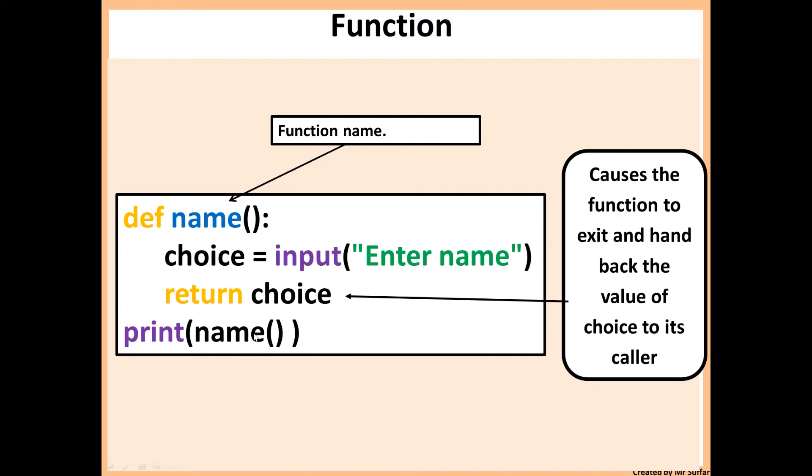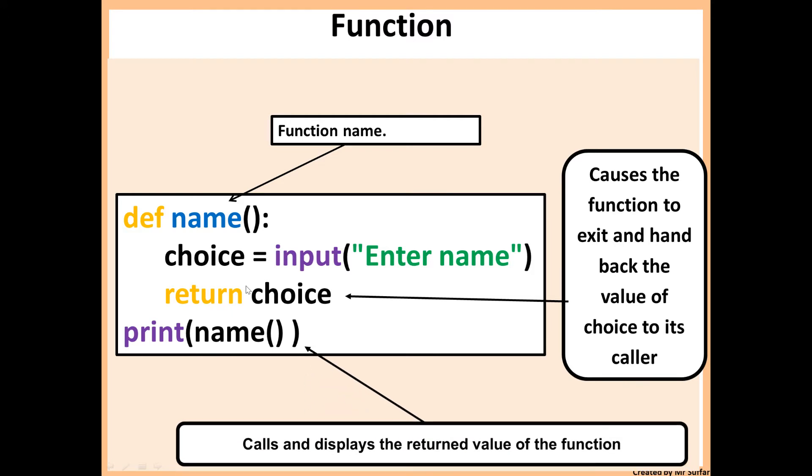The difference between a procedure - normally with a procedure you'd just use the print command, print choice. But with a function, we use return. So in the exam, if you see return, it means it's a function, not a procedure, because a procedure cannot return a value. And then we've got print name with parentheses, so name is the function name. That's how we call it.